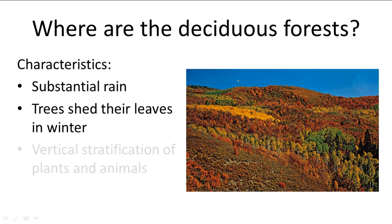Maple trees, elm trees, oak trees, and chestnut trees are only some of the many tree species, and animals include deer, skunk, black bears, and squirrels, just to name a few.